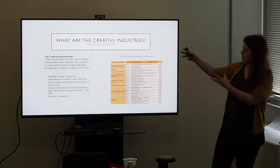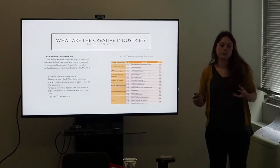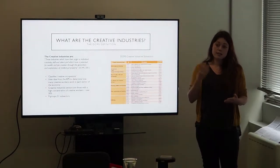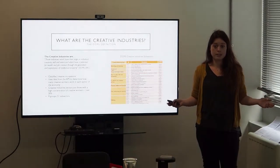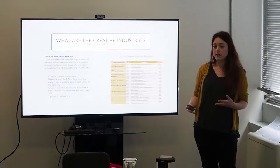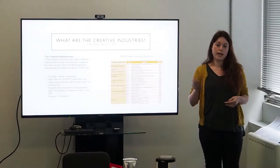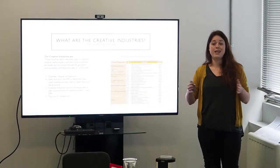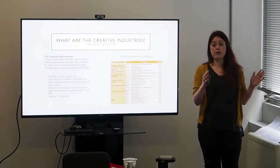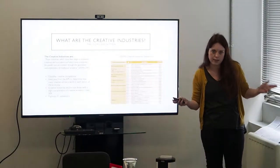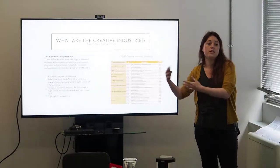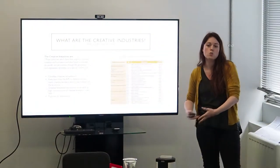And what has happened is they need to turn this theoretical definition into a practical operationalization, a way that we can actually measure those industries. So how they've done this is they started by identifying what they call creative occupations, so those are jobs which they identify as being creative jobs. Then they use data from the annual population survey to identify how many creative workers work in each section of the economy. From that they could see that some sectors of the economy had a large concentration of creative workers, or this high creative intensity they call it, and those sectors became the creative industries. So the creative industries are the industry sectors where over 30% of the people employed in those industries work in a creative occupation.